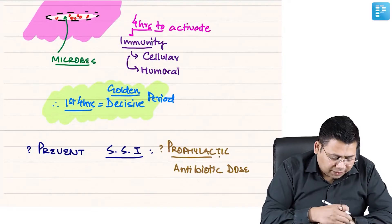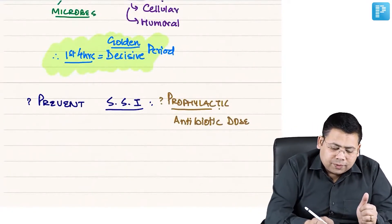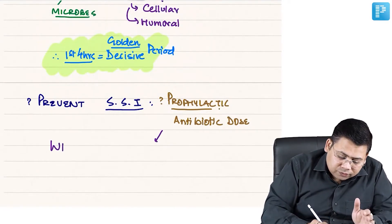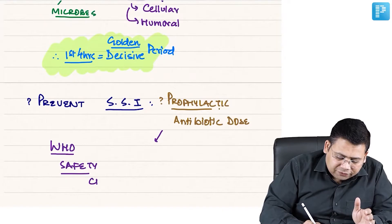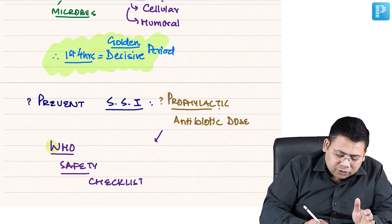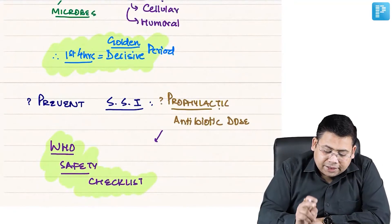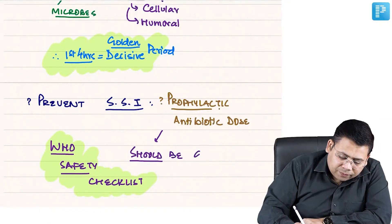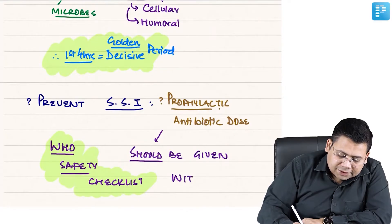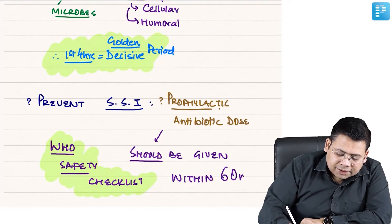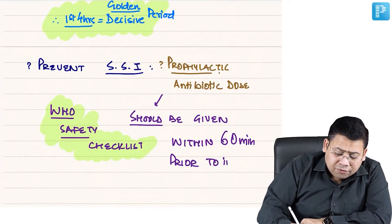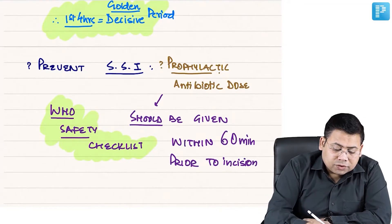So how do we prevent SSI? The answer is prophylactic antibiotic dose. When should this dose be given? According to the WHO safety checklist, the prophylactic antibiotic dose should be given within 60 minutes prior to incision.